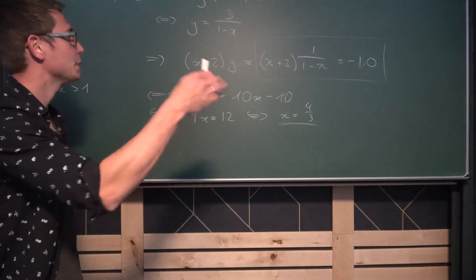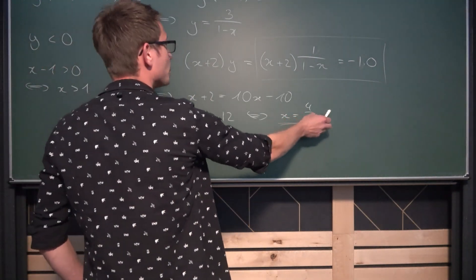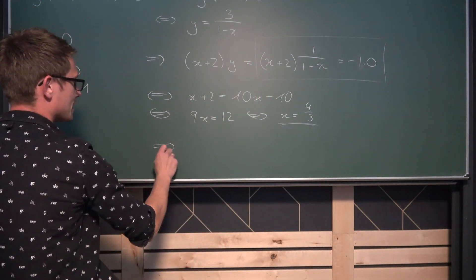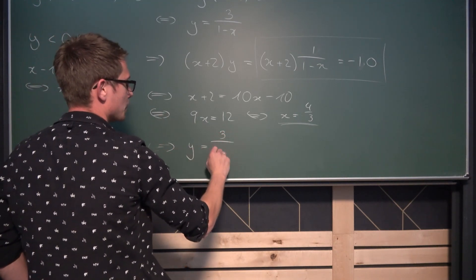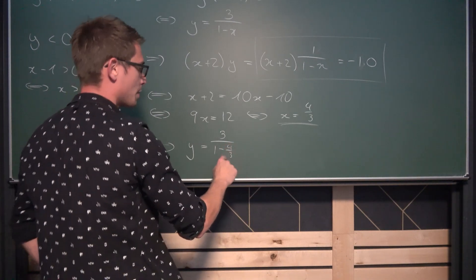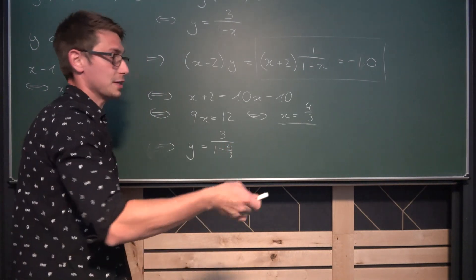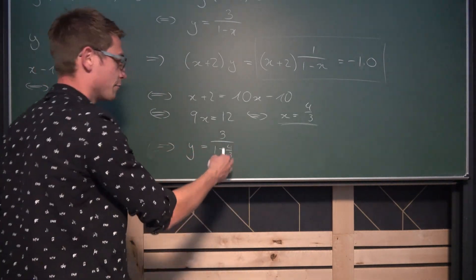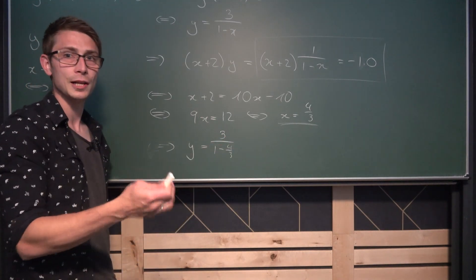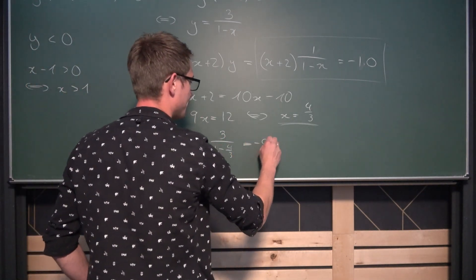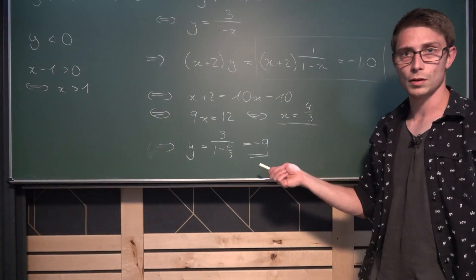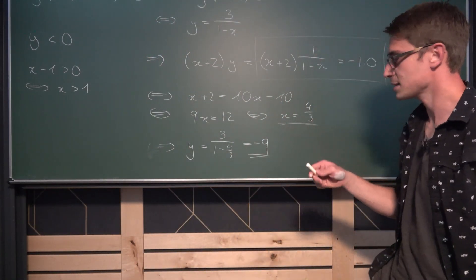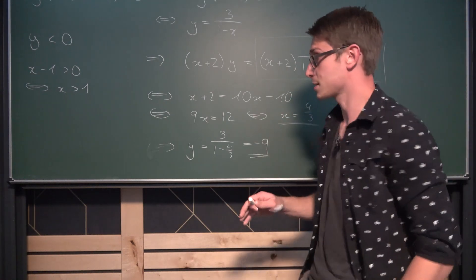So 1.3 repeating. And now we can put this into here giving us a value for y being equal to 3 divided by 1 minus 4 over 3. 1 minus 4 over 3 is 3 over 3 minus 4 over 3 which is negative 1 third. And then taking the reciprocal gives us negative 9. So y is going to yield an integer solution but x doesn't and this is my today's exercise.